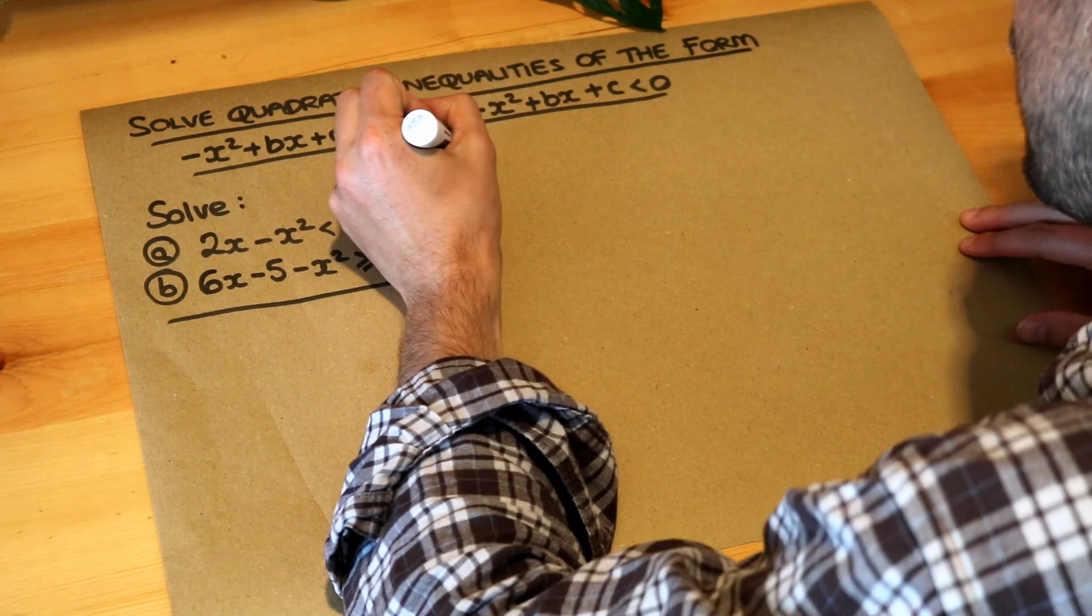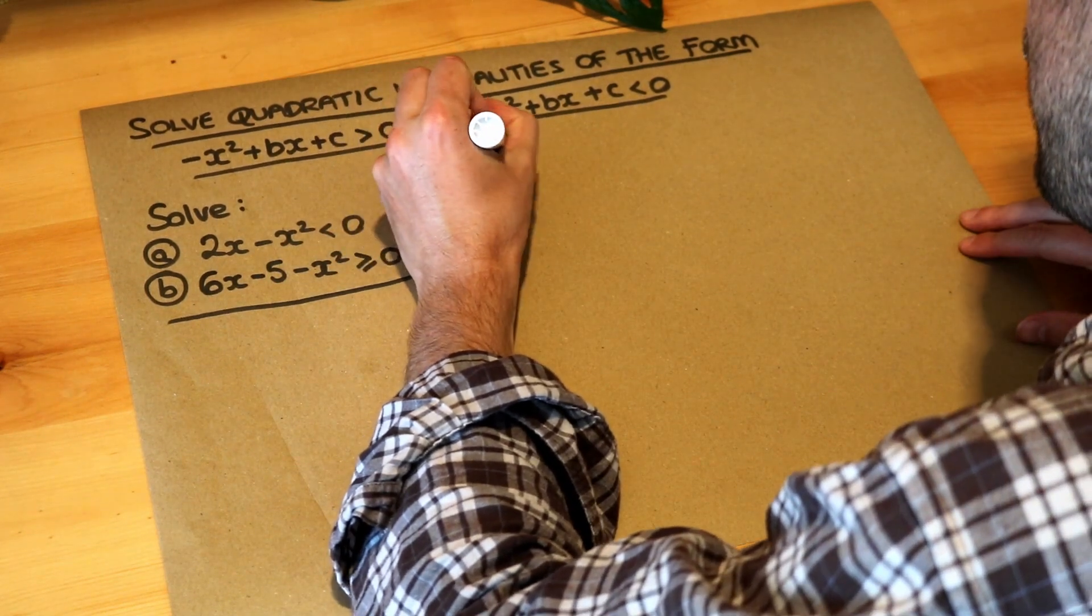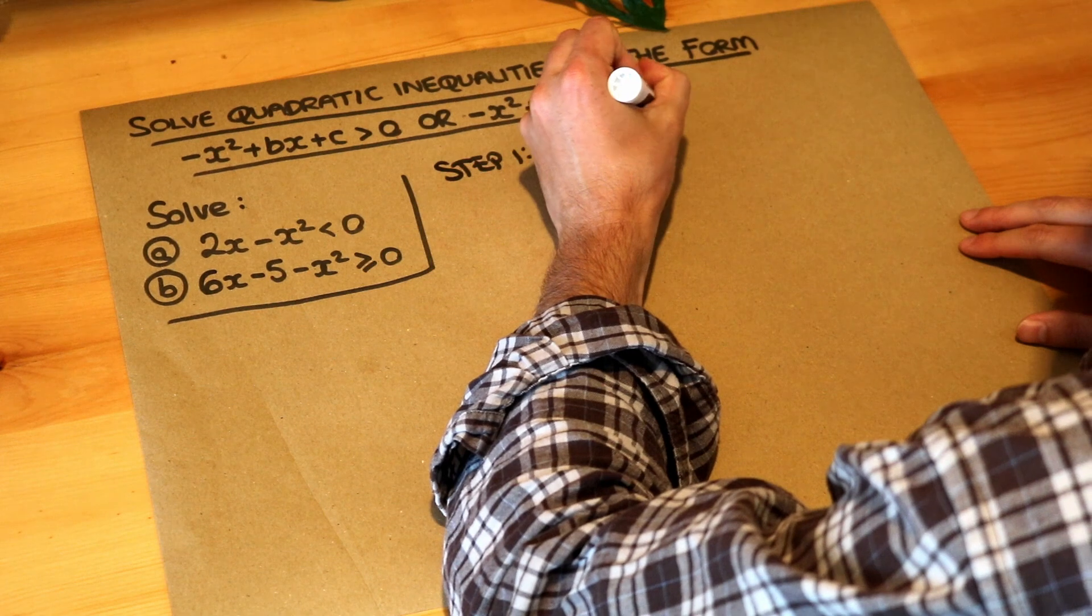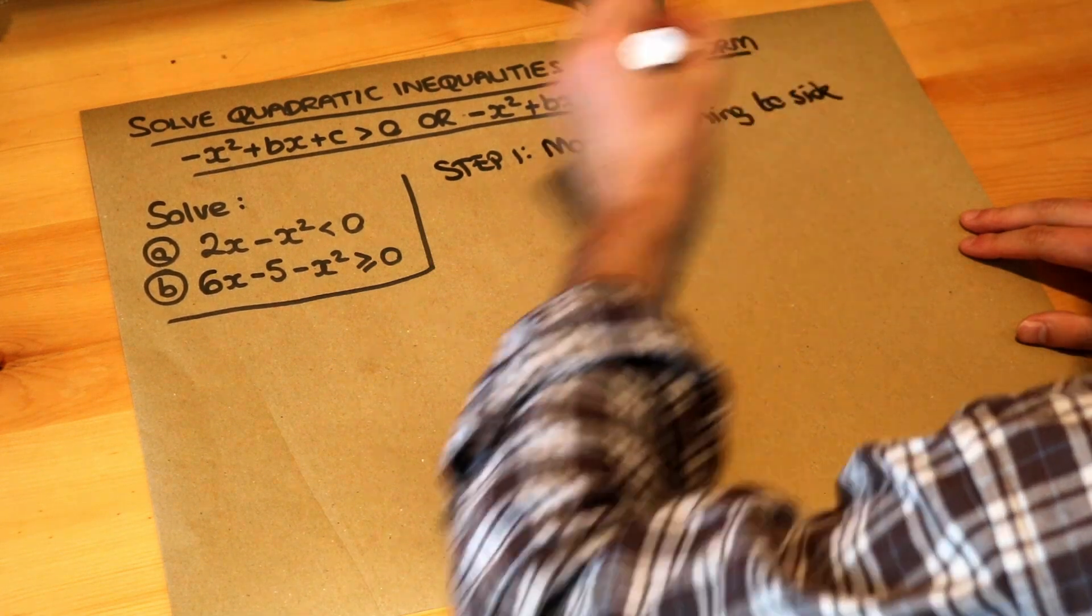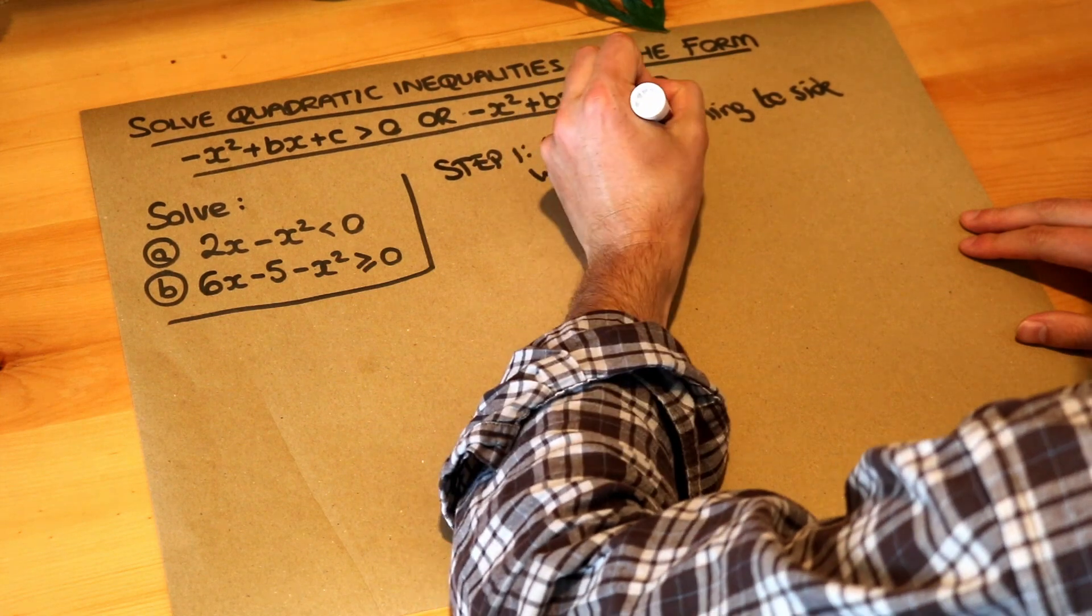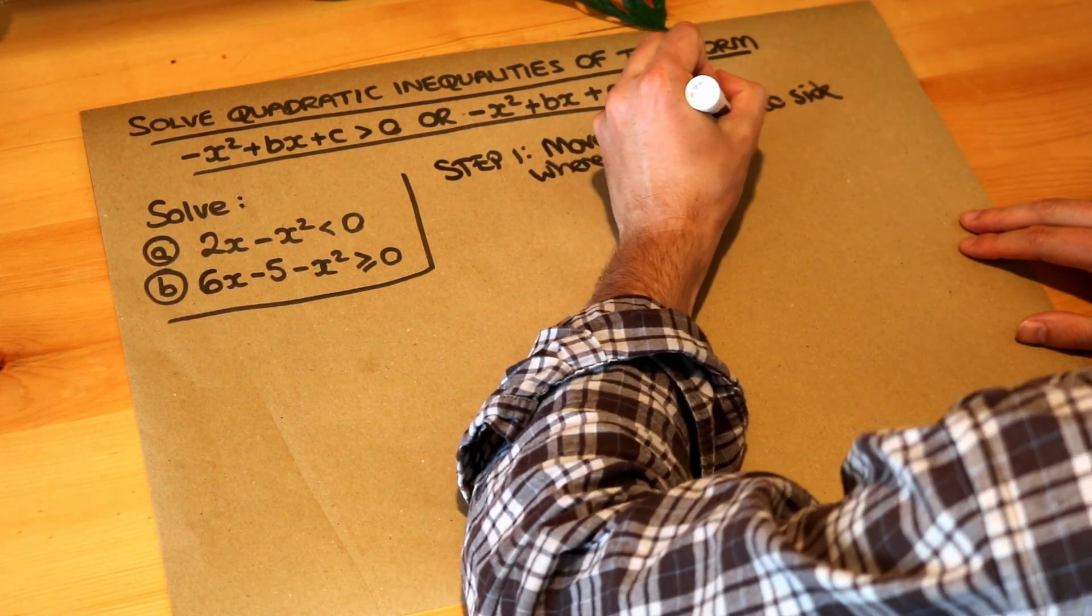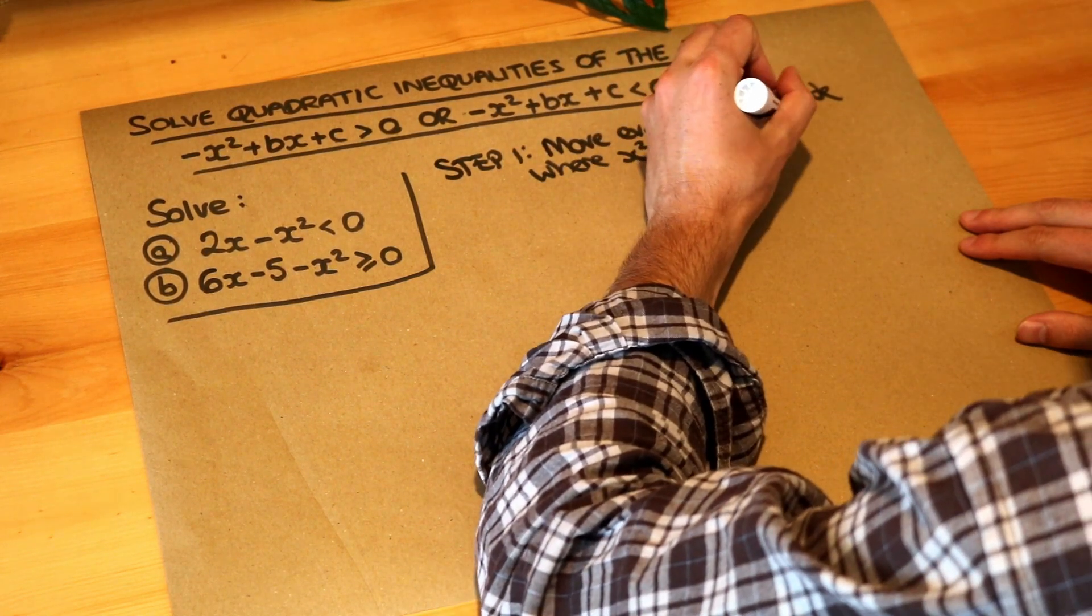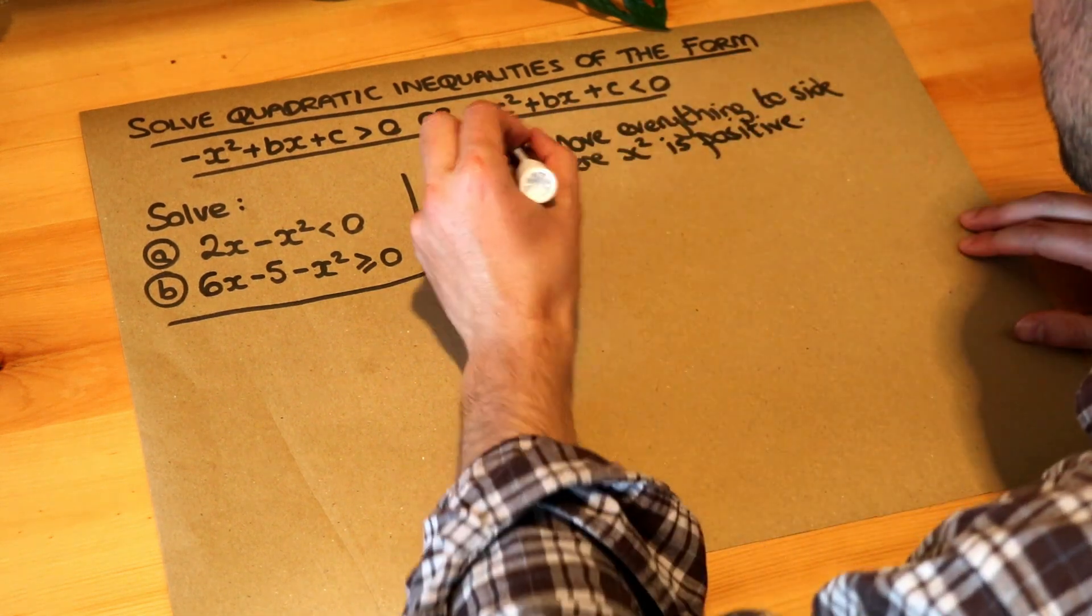So step one is going to be move everything to the side of the inequality where the x squared term will be positive because it just makes it easier. You can do it without doing that but it's just going to be much harder.